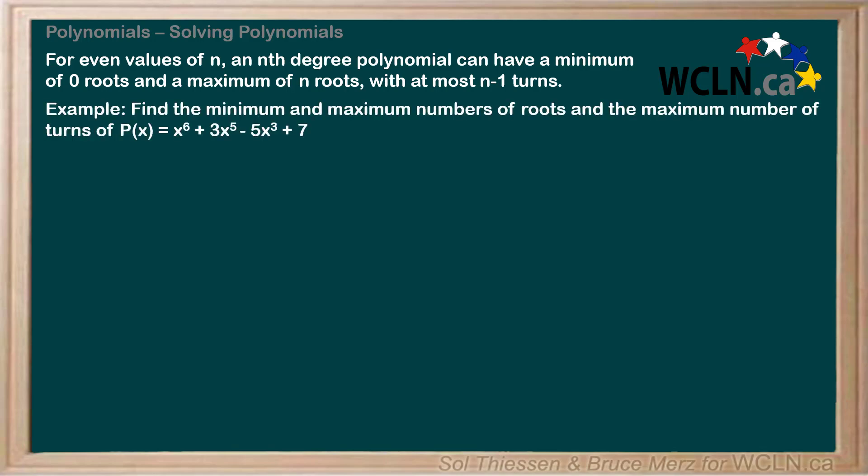Here's our example. Find the minimum and maximum numbers of roots and the maximum number of turns of p of x, which is x to the 6 plus 3x to the 5 minus 5x cubed plus 7. Our first step is to determine the degree of p of x, which is the same as the highest exponent on the x variable, which is 6, an even number.